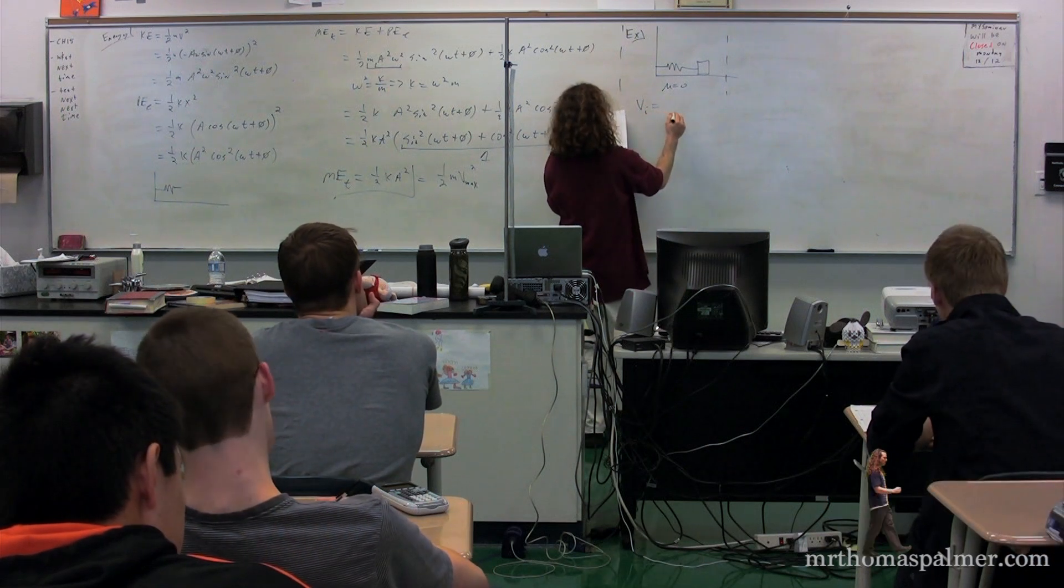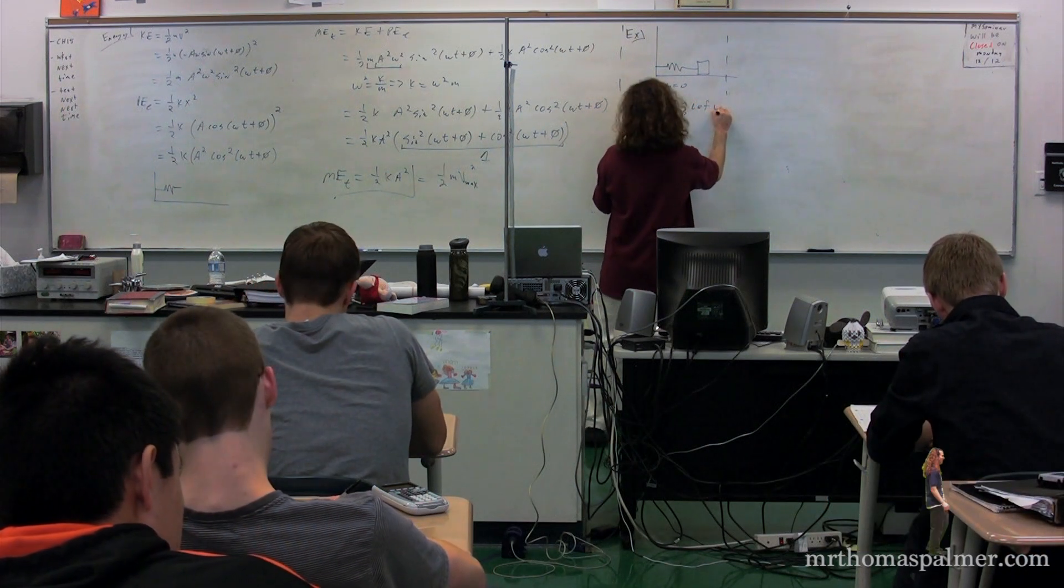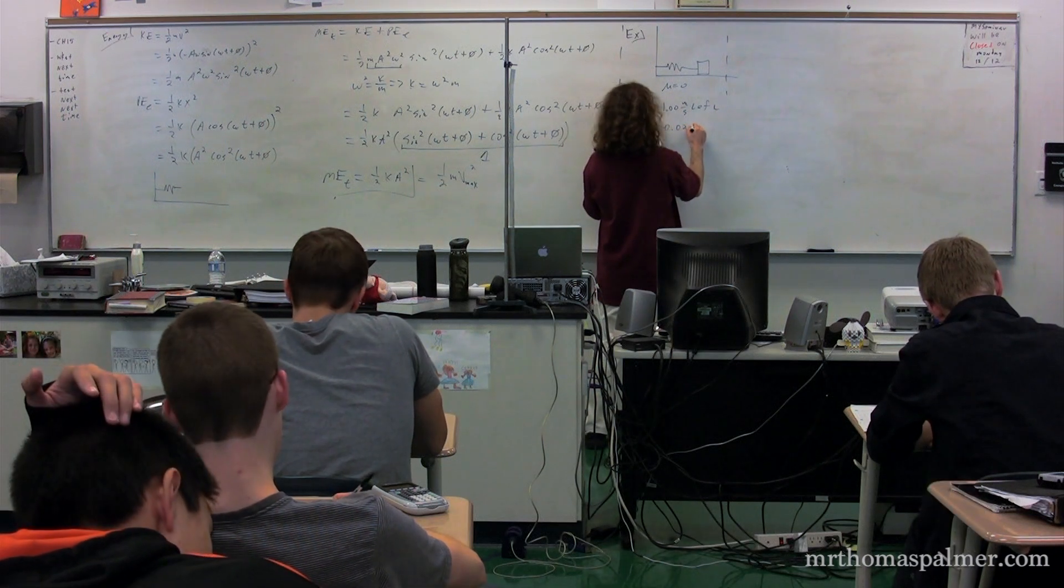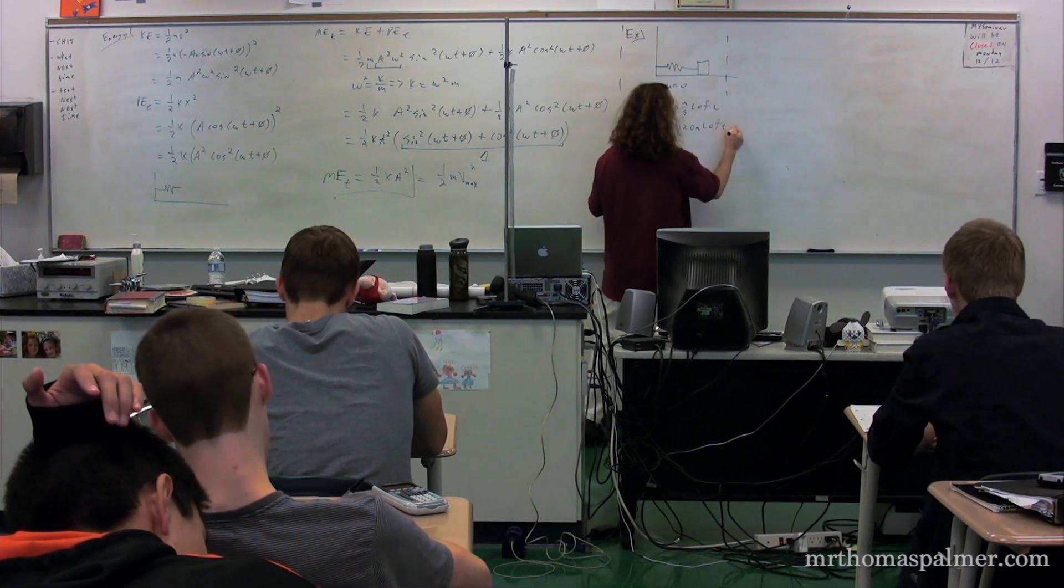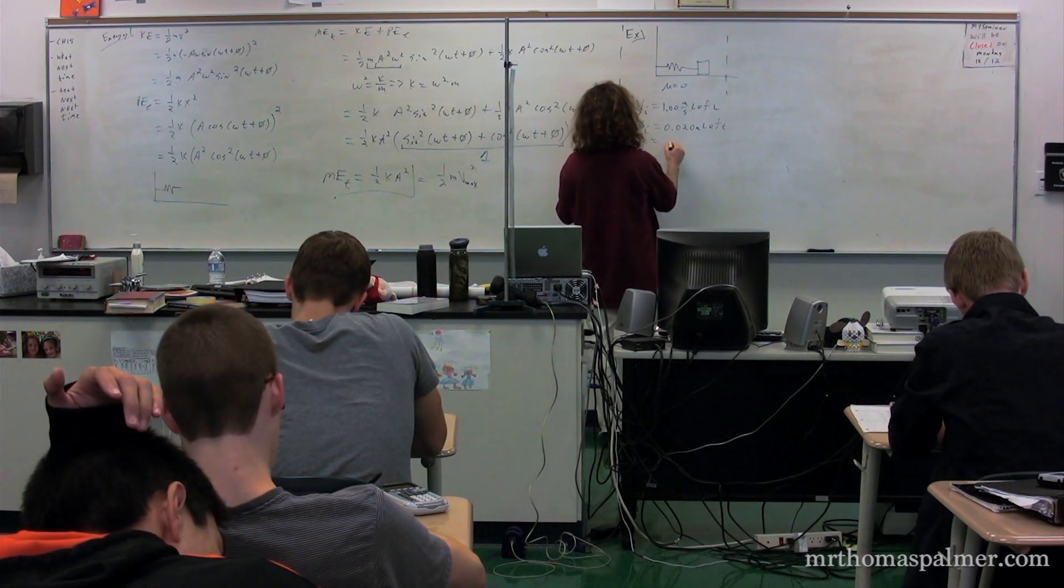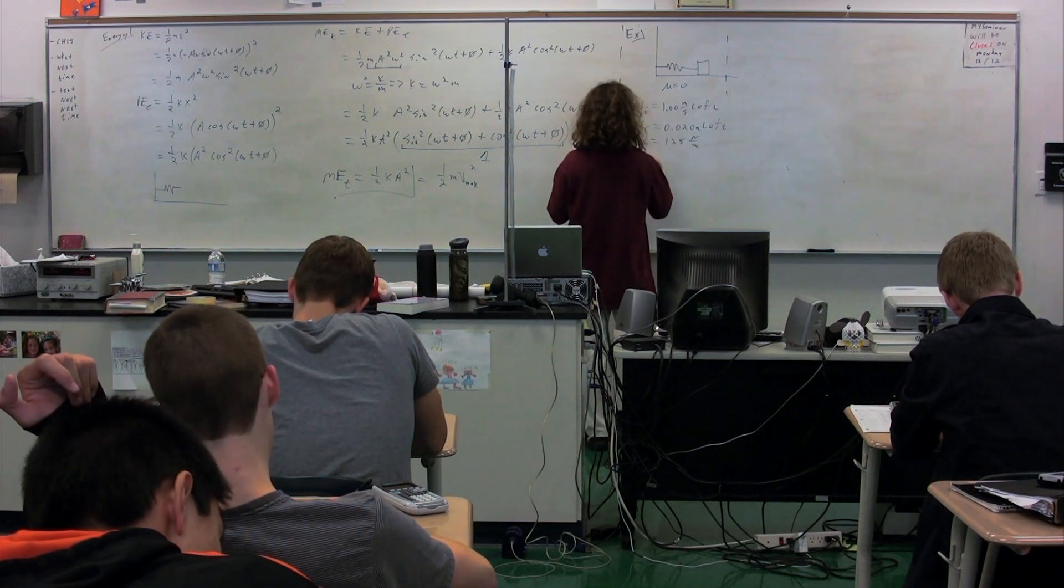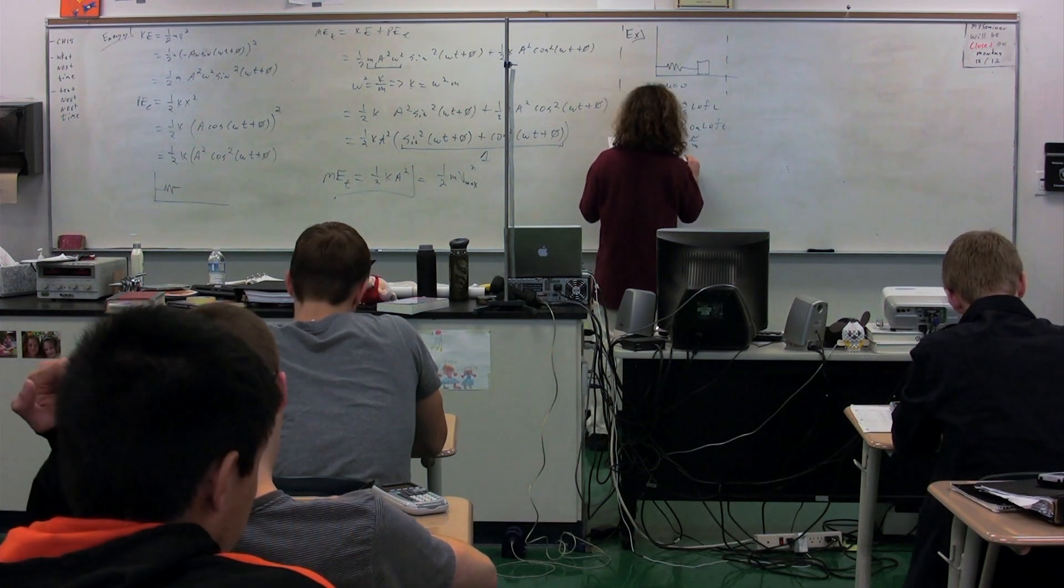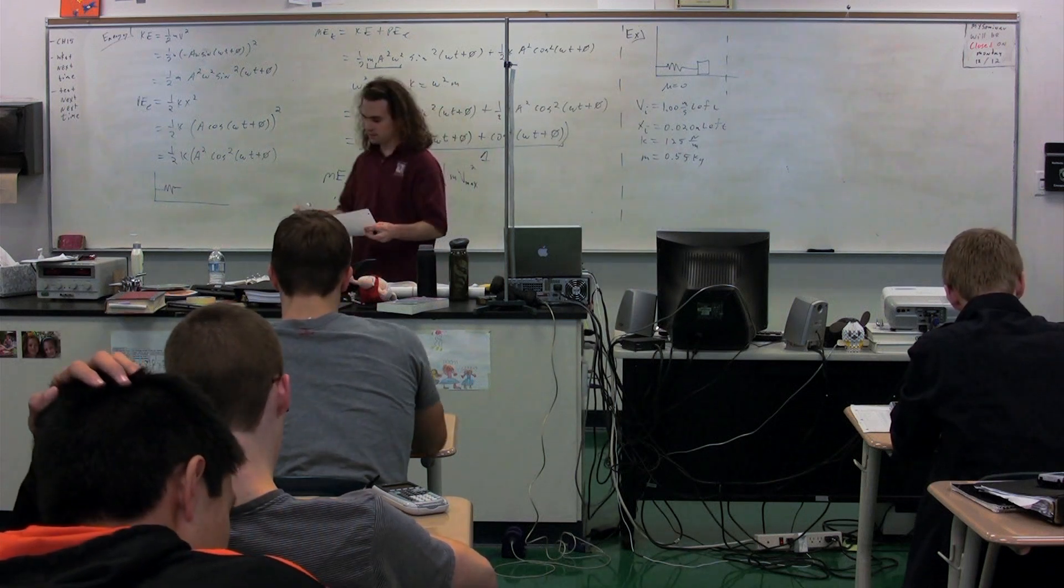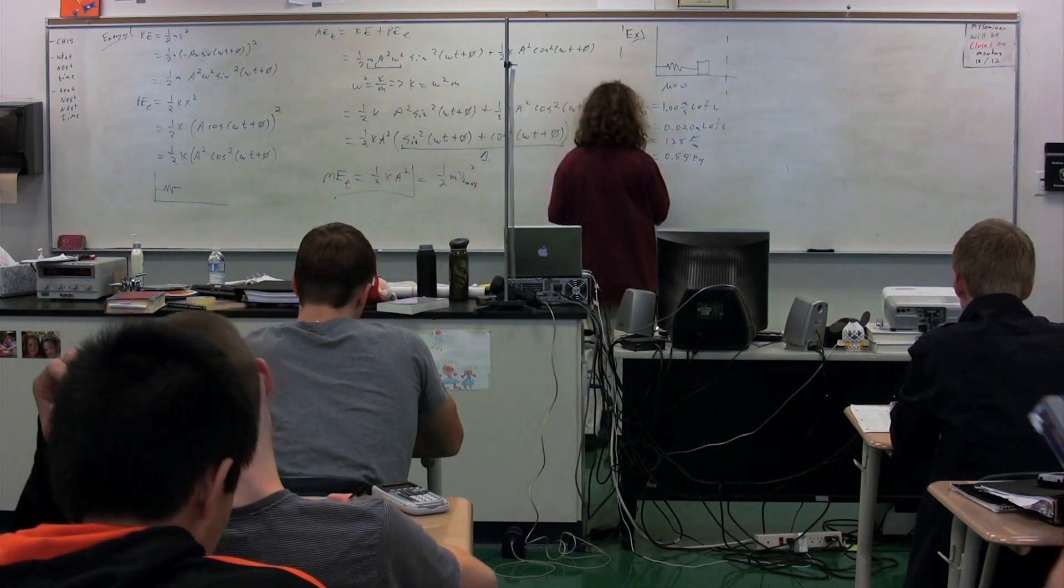It's going to start out with an initial velocity of 1.00 meters per second to the left. It's going to start at a position initial of 0.020 meters to the left of the equilibrium position. Let's say that there is a spring constant of 125 newtons per meter, and the mass of the object is 0.55 kilograms. And what I want to know is the position as a function of time of this object.